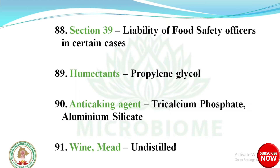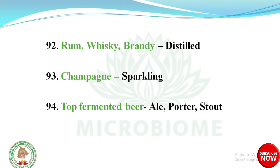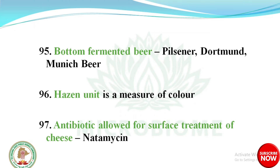Wine and mead come under undistilled beverages. Rum, whiskey, and brandy are distilled beverages. Champagne is a sparkling beverage. Top-fermented beers are ale, porter, and stout. Bottom-fermented beers are Pilsner, Dortmund, and Münich beer.